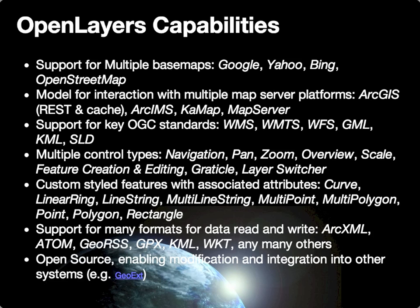Beyond specific map server platforms, each of which potentially has its own specific APIs, one of the most useful characteristics of OpenLayers is its support for a variety of key Open Geospatial Consortium standards, including standards we've previously discussed: the Web Map Service, Web Feature Services, and also the GML format for the representation of vector data and their associated attributes, and the KML standard.